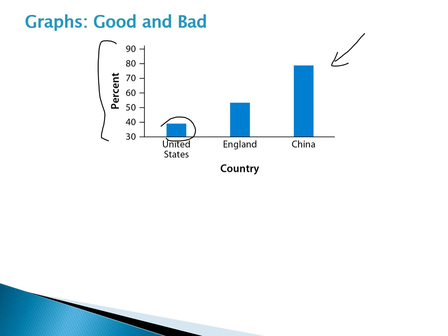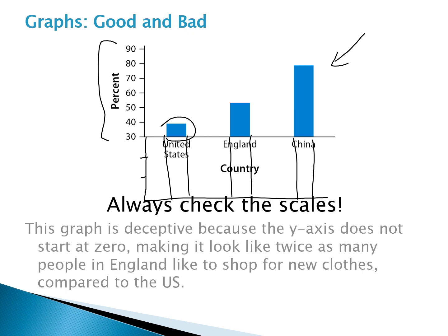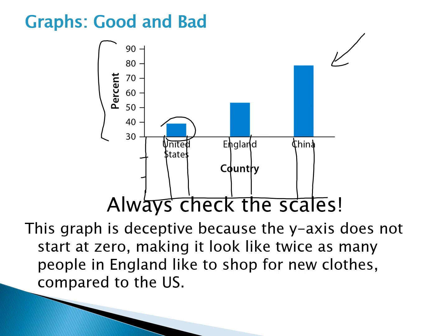The scale should really go down to zero, because all of these bars are actually a lot higher than they appear. If this were created with the scale going all the way down to zero, it gives a much better representation of the proportions when comparing these three countries. We always want to check the scales so we're not being misled by a graphic.